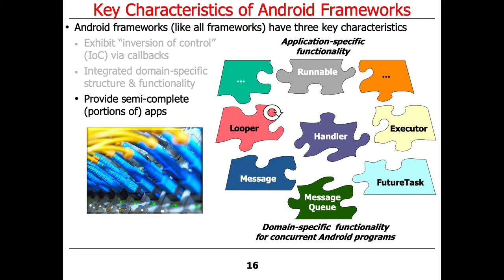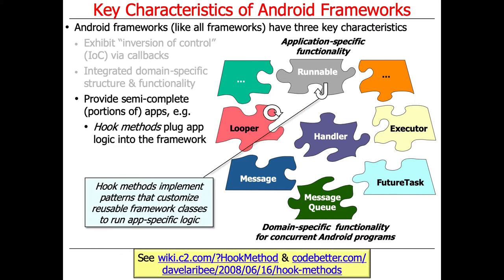The last characteristic of a framework is that they provide semi-complete portions of apps. An awful lot of the capability is provided out of the box and you just have to plug things in — you plug things into this backplane. The mechanisms by which this occurs is through something called hook methods. Hook methods are implementations of patterns like the factory method pattern or the template method pattern, where you can customize reusable framework classes to run app-specific logic at particular hook points or hotspots in the code.